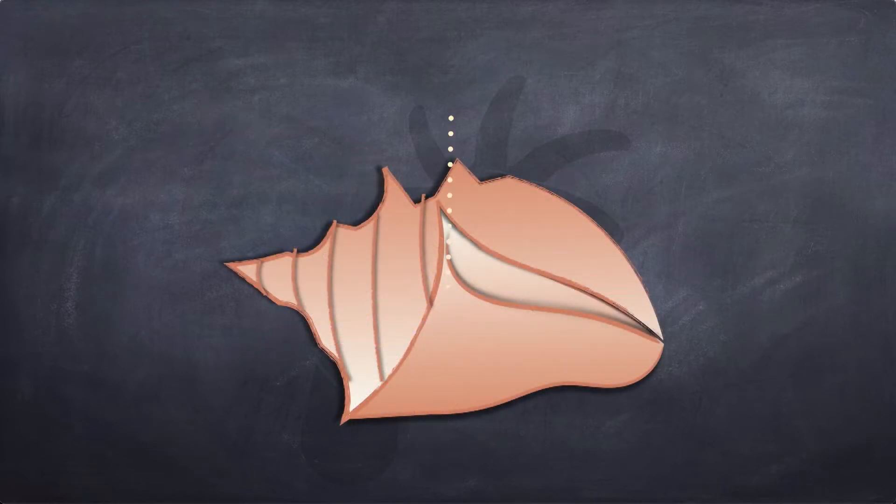But the shell — there is no way to draw a line through it anywhere to give equal and similar parts.